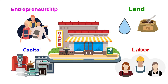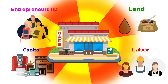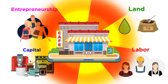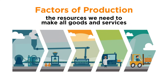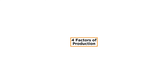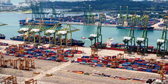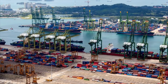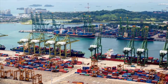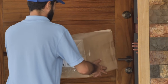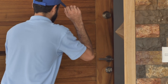With all four factors of production met, a delightful artisanal coffee shop has been produced. To summarize, factors of production are the resources we need to make all goods and services. However, the four factors of production are only the beginning, as goods and services also must be distributed. So let's move forward and learn about how trade is critically important in order for goods and services to reach the maximum amount of people possible.